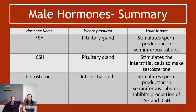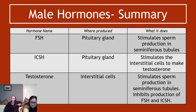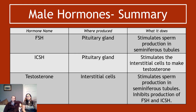To summarize: FSH is produced in the pituitary gland and stimulates sperm production in the seminiferous tubules. ICSH is also produced in the pituitary gland and stimulates the interstitial cells to make testosterone. Testosterone is produced in the interstitial cells; it stimulates sperm production in the seminiferous tubules but also inhibits the production of FSH and ICSH, which in turn inhibits its own production. Next we'll cover the female hormones in section three.